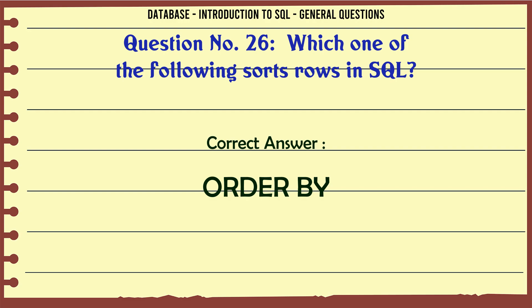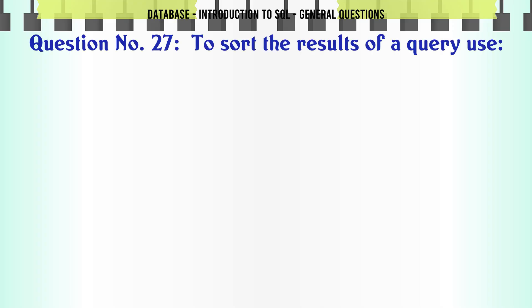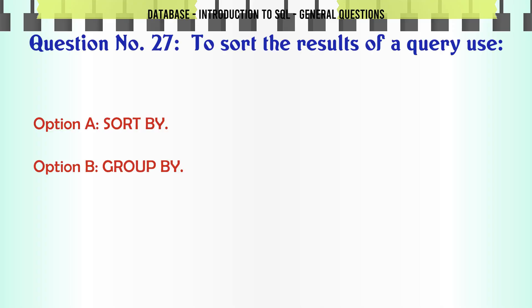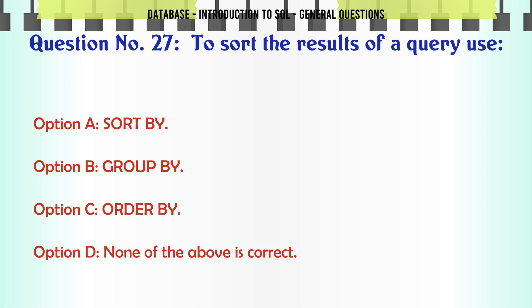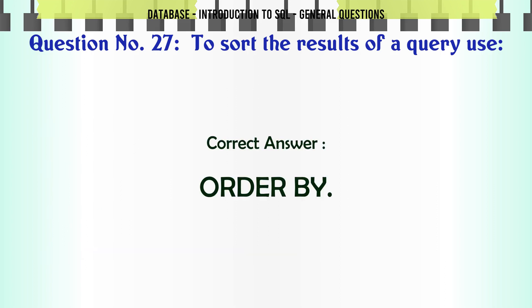To sort the results of a query, use: A. Sort by. B. Group by. C. Order by. D. None of the above is correct. The correct answer is: Order by.